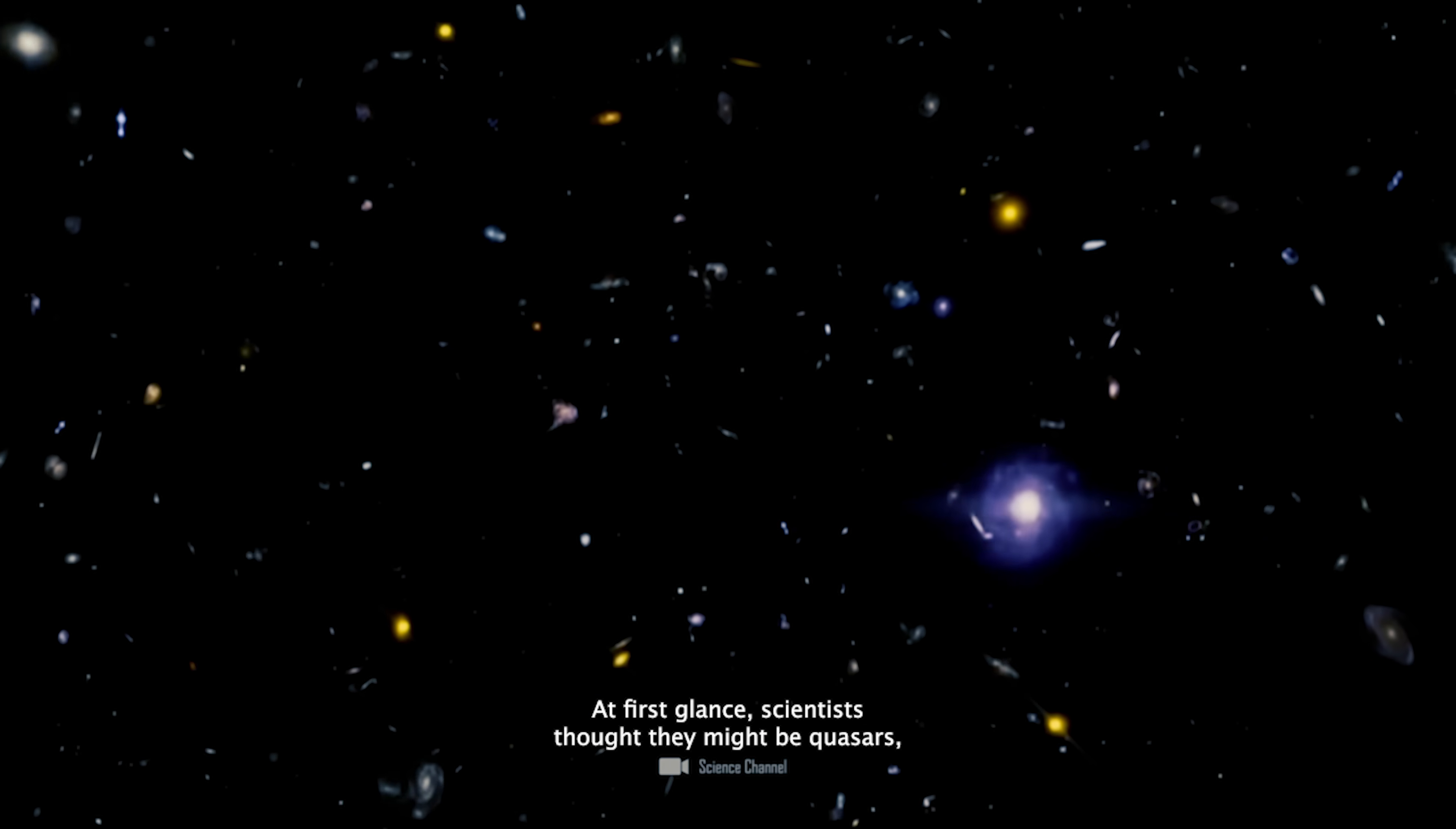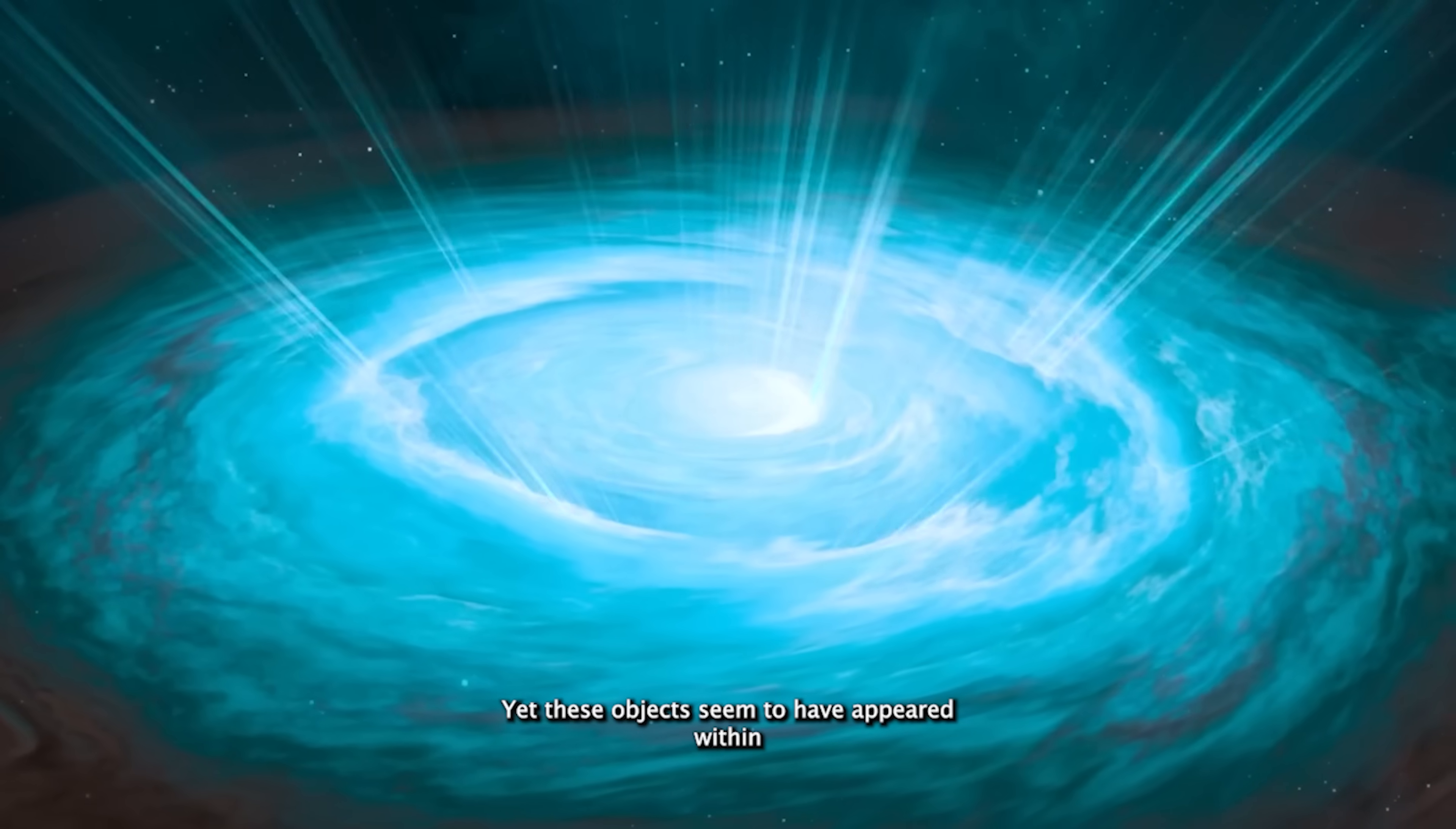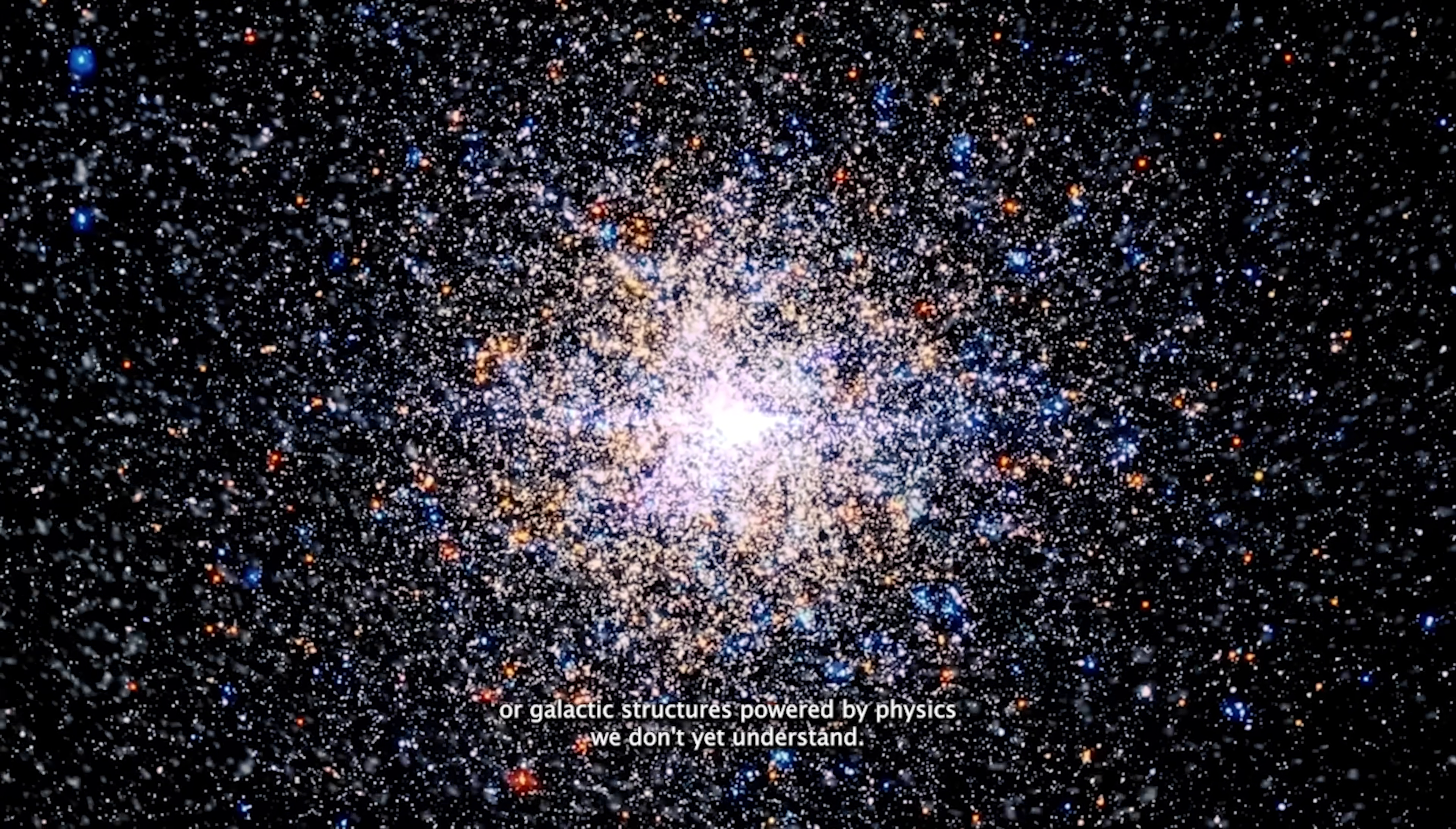At first glance, scientists thought they might be quasars, supermassive black holes surrounded by swirling discs of matter that shine incredibly brightly. But that theory quickly ran into trouble. According to established models, it takes hundreds of millions of years for such giant black holes to form. Yet these objects seem to have appeared within just 300 to 400 million years of the universe's birth. So, what are they? Some experts suggest they may belong to an entirely new class of cosmic phenomenon. Perhaps dark stars or pre-galactic structures powered by physics we don't yet understand.